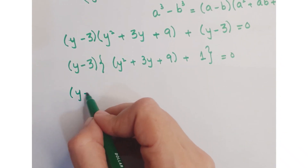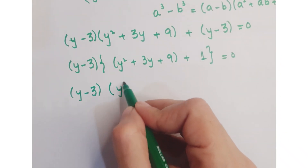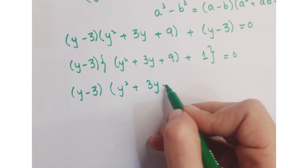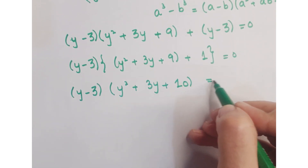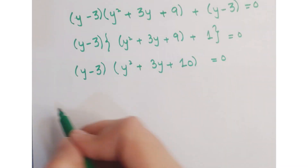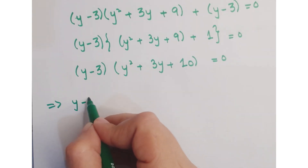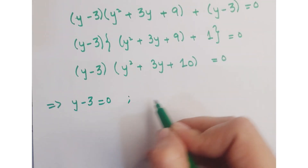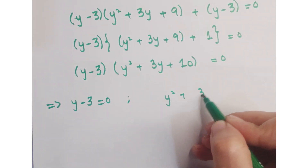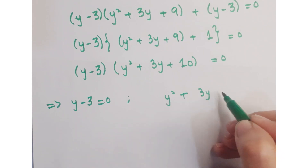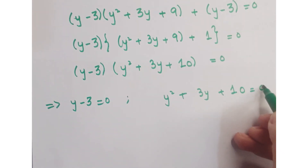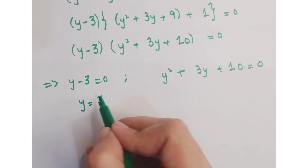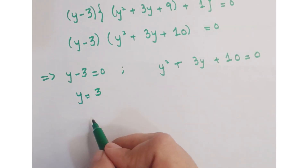Further, you can simplify it as y squared plus 3y plus 10 equals 0. Now this implies that y minus 3 equals 0, and y squared plus 3y plus 10 equals 0. From the first factor, y equals 3.